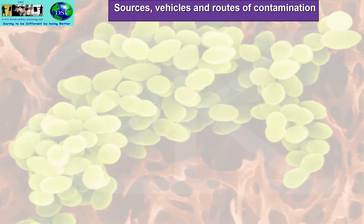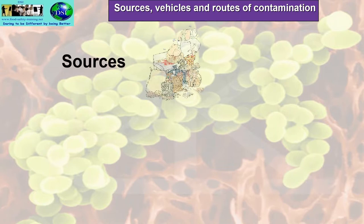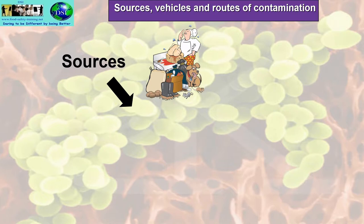Let's look at sources, vehicles and routes of contamination. Sources could be from the food handler, raw poultry, chopping boards, insects, dogs, rodents, dirty muddy boots, refuse containers and packaging. All of these are sources of contamination.